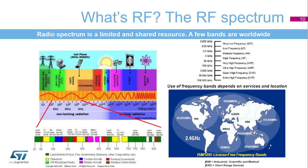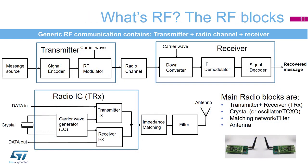There is a need to utilize the spectrum more effectively by modern telecommunication technologies. Generic RF communication contains a transmitter, radio channel, and receiver. The source is the message we want to send, followed by a signal encoder and RF modulator. It is modulated by the carrier wave to an appropriate carrier frequency. At the receiver side, there is a down converter that converts the radio signal to intermediate frequency. It is followed by the IF demodulator and signal decoder that recovers the message.